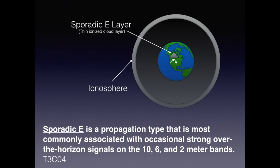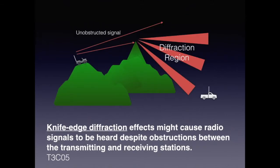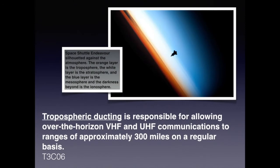One way radio signals overcome obstructions is a phenomenon called knife-edge diffraction. When a radio signal encounters something like the sharp edge of a building, the effect is that a portion of the radiation is redirected. You should remember that knife-edge diffraction effects might cause radio signals to be heard despite obstructions between the transmitting and receiving stations.